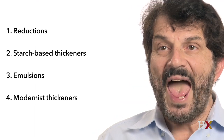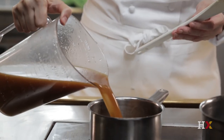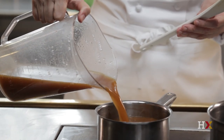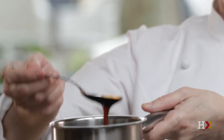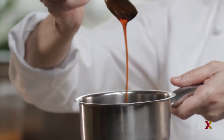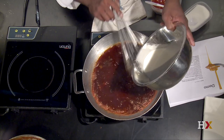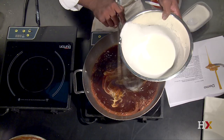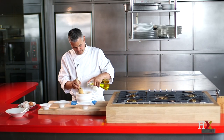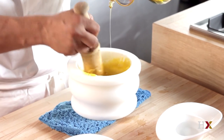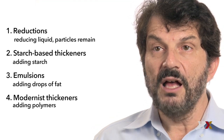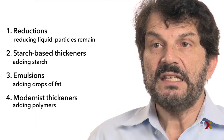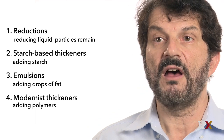In all cases, what we're doing is adding something to the fluid. In the case of reduction, we're reducing the amount of liquid, and what remains are particles or non-volatile solids — this increases the concentration of solids in the liquid. In the case of starch, we're adding starch granules. In the case of fat or making an emulsion, we're adding drops of fat, and the drops of fat behave just like particles. In the case of modernist thickeners, we're adding polymers, which also have the effect of adding something to the fluid, and this is what increases the viscosity.